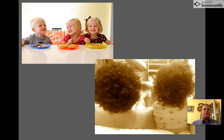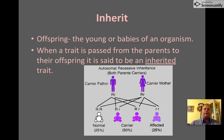As you see in these two pictures, the children and the people in the family look similar — they have similar facial shapes and similar hair characteristics. To inherit means to get traits from your parents, or from the generation before that. An offspring is the young or babies of an organism.